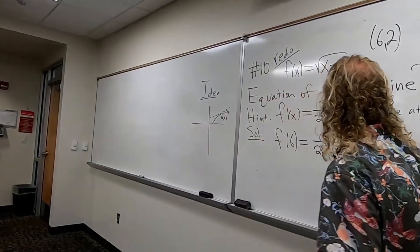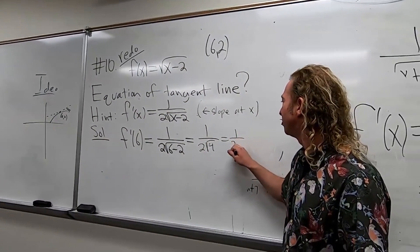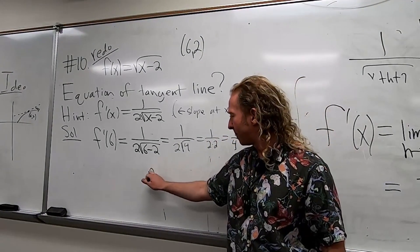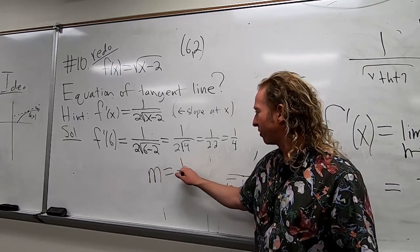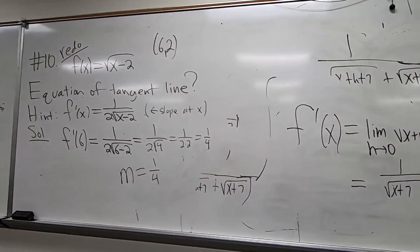This is one over two square root of four. It's one over two times two. So it's one over four. So m is one-fourth. That's the slope of the tangent line.